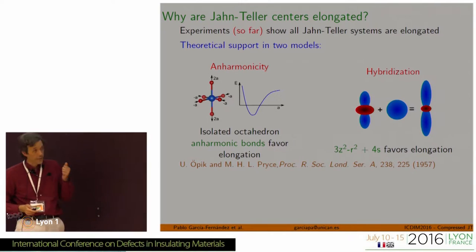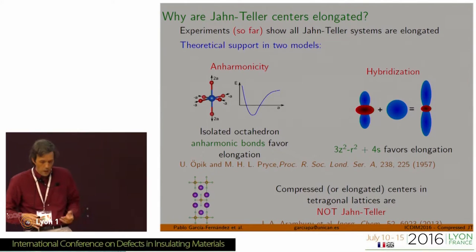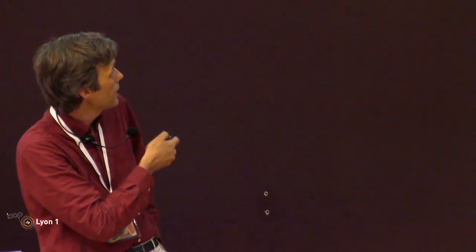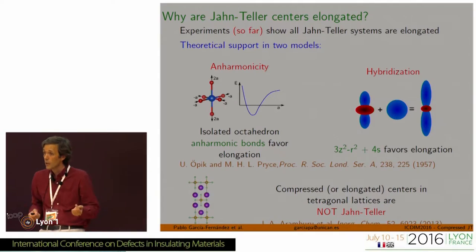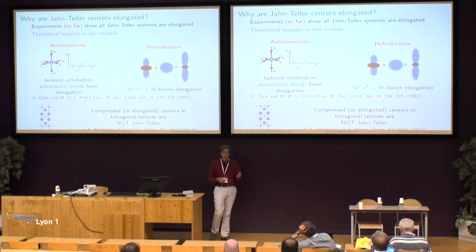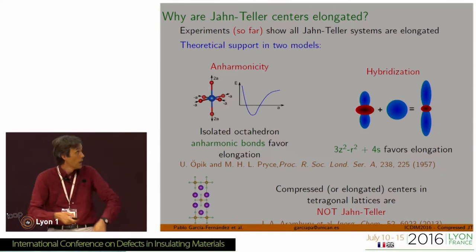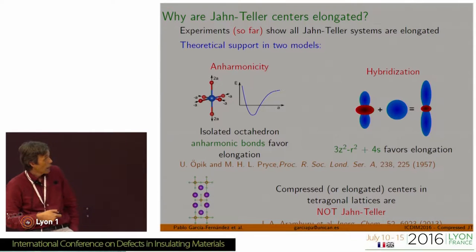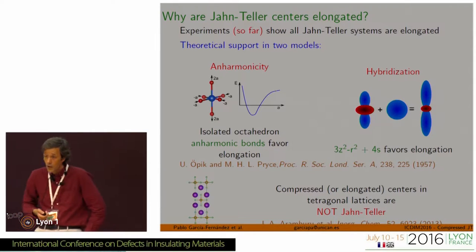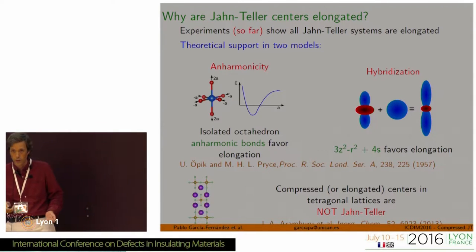I would like to make a disclaimer. There are some cases in the literature that report compressed Jahn-Teller centers, but they are in tetragonal lattices. In a tetragonal lattice, a D7 or D9 impurity is not Jahn-Teller — the symmetry is lower than octahedral and the orbital degeneracy doesn't exist. So, these centers are not genuine Jahn-Teller centers, and the geometry they require has nothing to do with what we are going to discuss here.